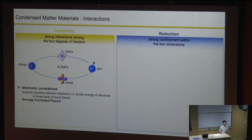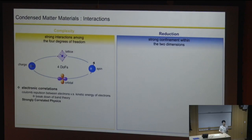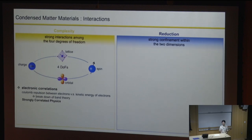Let me highlight two types of interactions among these four degrees of freedom. One is the so-called electronic correlation, which is essentially the Coulomb repulsion between charges. Coulomb repulsion is everywhere, but the criteria for correlated materials requires your Coulomb repulsion to be stronger than the kinetic energy of the electron. That makes the picture harder to simplify to independent electrons—the so-called strongly correlated physics regime, where we can realize phenomena like unconventional superconductivity and magnetism.